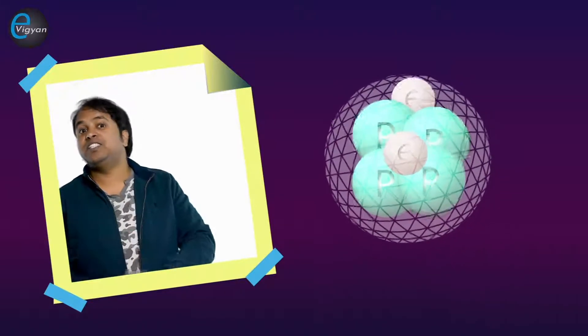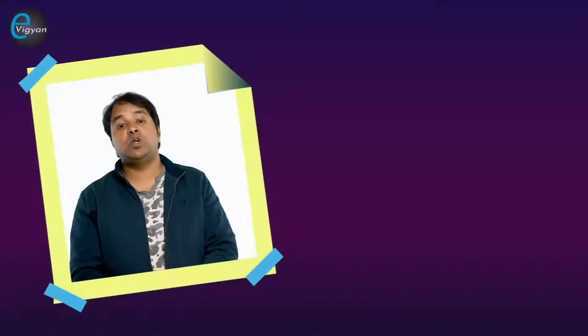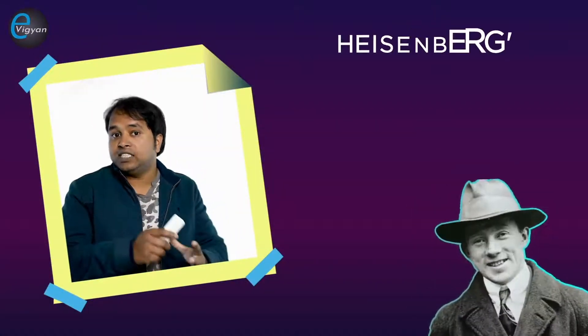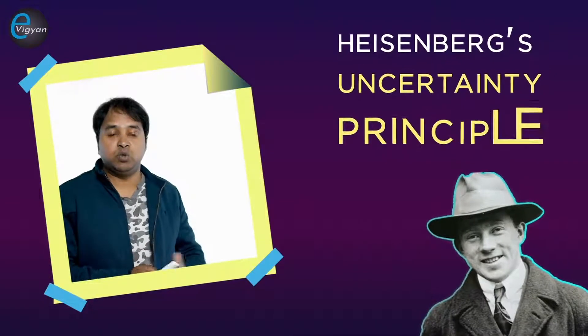Although the proton-electron hypothesis was satisfactory in some respects, it led to serious difficulties and had to be given up. One of the most serious difficulties arose from Heisenberg's uncertainty principle in quantum mechanics.